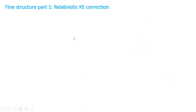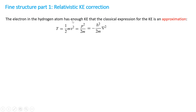Let's concentrate on the fine structure. The first part is the relativistic kinetic energy correction. The classical kinetic energy T = p²/2m, which as an operator becomes −ℏ²/2m times the Laplacian. The full relativistic expression is T = E − mc², where E = √(p²c² + m²c⁴), and subtracting the rest energy mc² gives the kinetic energy.